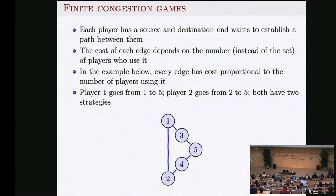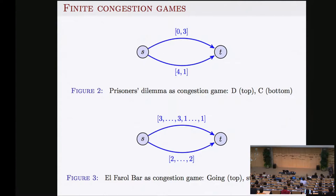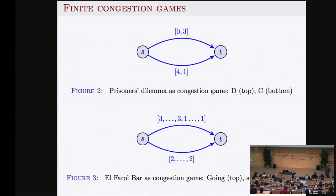Many games are like this. The prisoner's dilemma can be viewed as a congestion game. Each player has two choices: defect (go up) or collaborate (go down). If you defect alone you pay zero; if both defect you each pay three. If you collaborate alone you pay four; if both collaborate you pay one. The Nash equilibrium — in fact the dominant equilibrium — is that both defect and pay three.